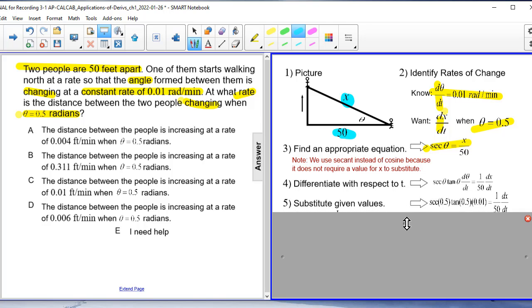And now we can begin to substitute our different values. So we know that theta is going to equal 0.5 radians. That's the instant we're trying to find out the rate of change. We also know that d theta dt is equal to 0.01. What we're looking for is dx dt.